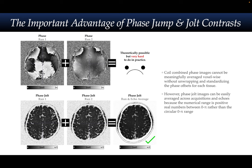Whereas if we move to the first or second spatial derivative of the phase, it is much more straightforward to deal with multi-run averaging when operating on the magnitude of these derivatives. This is possible because, while taking the spatial derivative of the phase image, the circular differences of the phase values — between 0 to 2π — are accounted for in the voxel-wise circular difference calculation. In other words, phase jolt or phase jump images are automatically phase unwrapped, although it should be noted that this is not the same as phase unwrapping the 0th order measurement — it is a derived measurement.